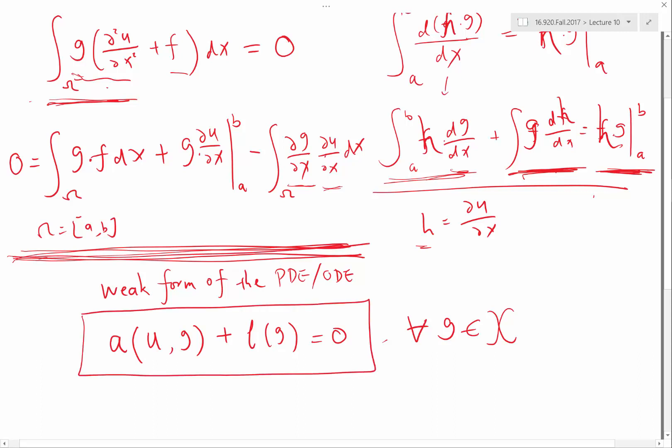And in this case, if you look at the weak form for the Poisson's equation. Oh, by the way, the weak form actually contains the boundary condition. So, for example,